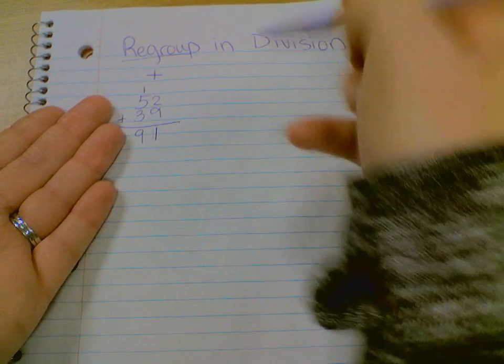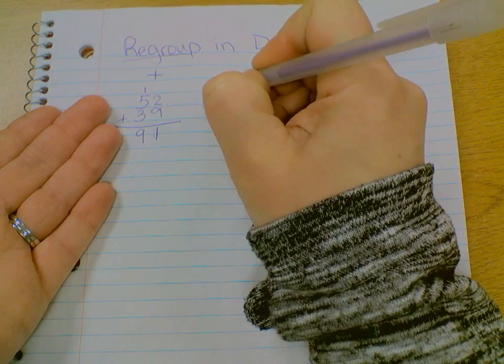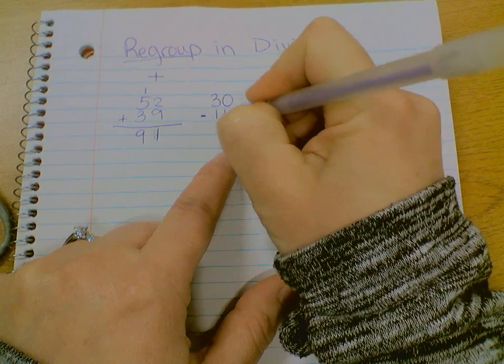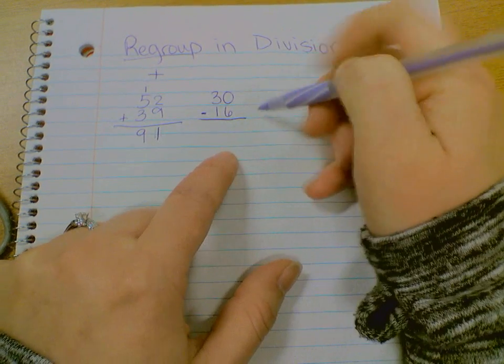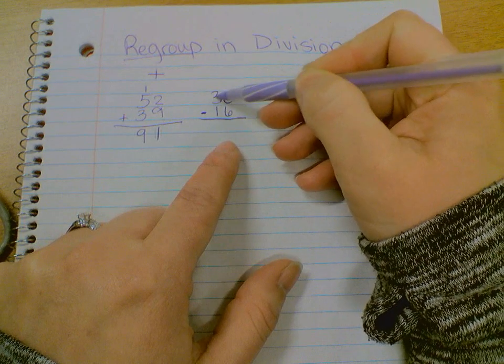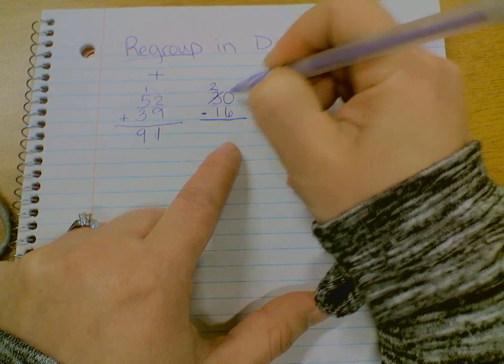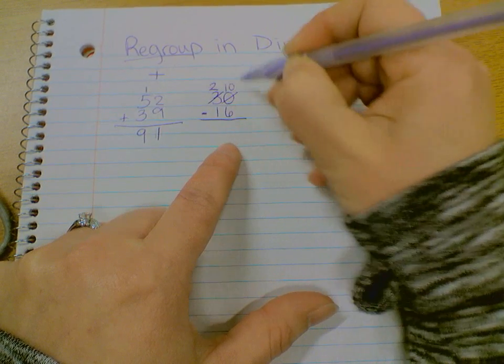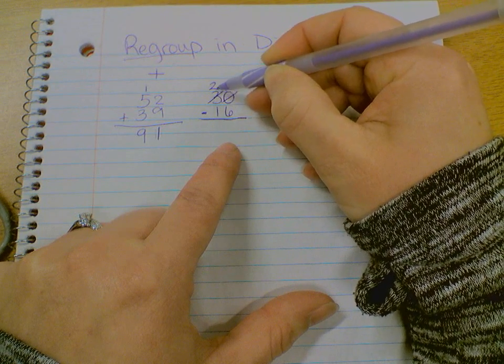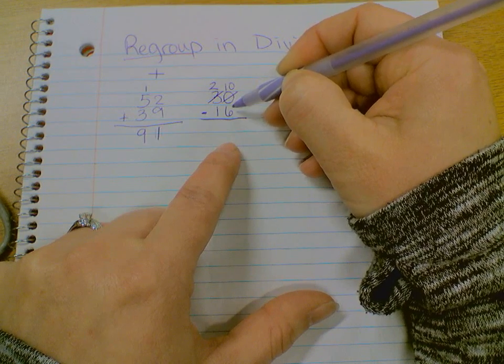In subtraction, regrouping is when you have to borrow. So let's say that we had 30 minus 16. Well, starting with the ones place, you can't do zero minus six, so you borrow from the three in the tens. That's regrouping. In order to do the zero minus six, we have to regroup. We had to take a ten from the three to place into the ones place, and that's regrouping.